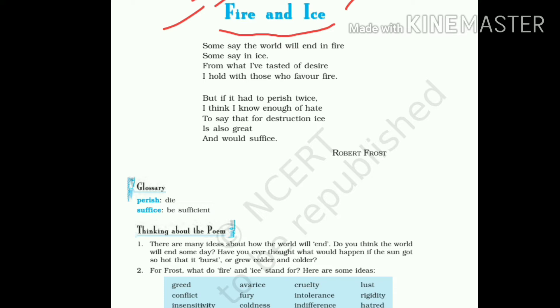The poet wants to emphasize that one day everything will come to an end. He wants to bring out the bitter truth of this world that it is mortal. The reason for the destruction or the end of this world would be either fire or ice. Let's read the poem and try to comprehend. Some say the world will end in fire, some say in ice.